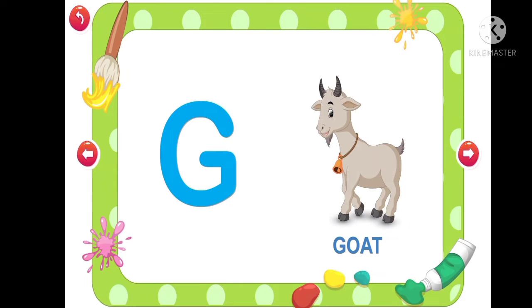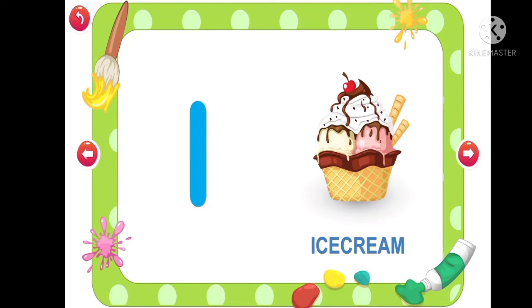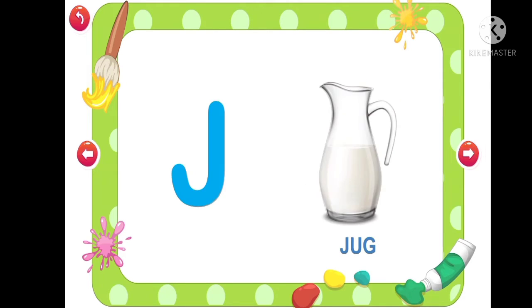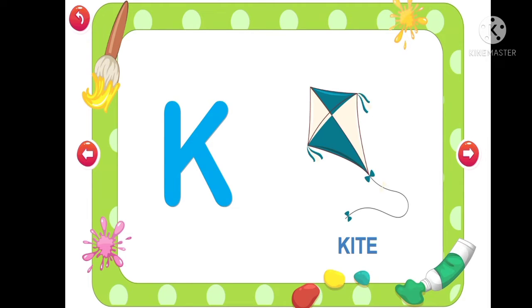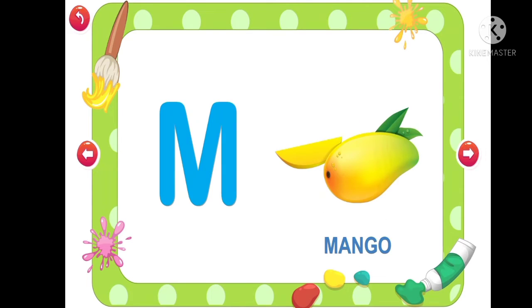H for House, I for Ice Cream, J for Jug, K for Kite, L for Lion, M for Mango.